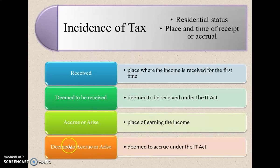Deemed to Accrue or Arise — as per the Income Tax Act, the income is deemed to accrue inside India. To summarize these four concepts: Received is the place where the income is received for the first time. Deemed to be received means as per the Income Tax Act, the income is assumed to be received by the assessee. Accrue or Arise is the place where the income is earned. Deemed to Accrue or Arise means as per the Income Tax Act, the income is deemed or assumed to accrue inside India.